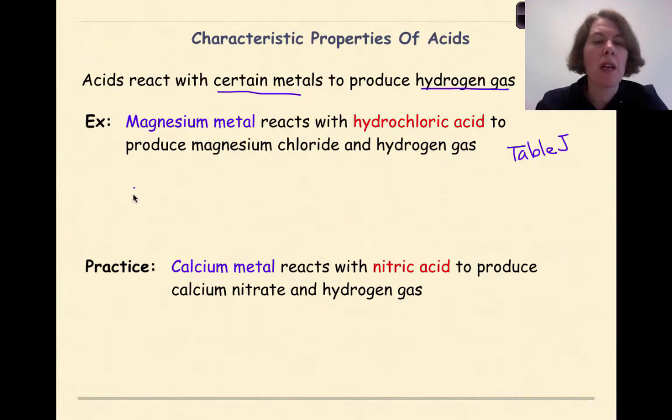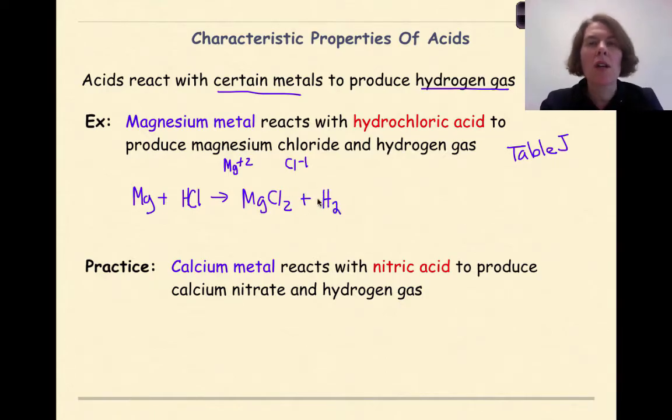So magnesium metal can be represented as Mg. Hydrochloric acid is in your reference tables. It is represented as HCl. To produce is an arrow. And then we have magnesium chloride. Now remember, magnesium is Mg plus 2. The chloride ion is Cl minus 1. So when we crisscross this, we're going to get MgCl2 and hydrogen gas plus H2. And the key thing to remember here is that hydrogen is a diatomic.